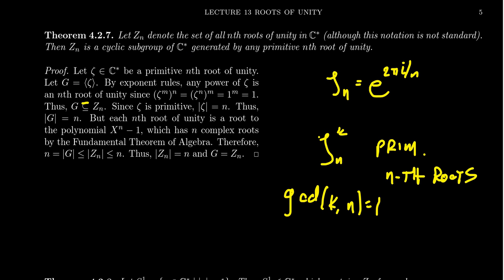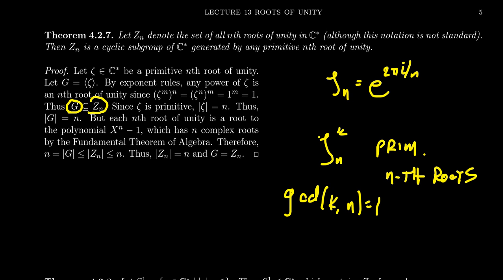Notice that in terms of order, zeta is an element of order n. You have to be careful with notation — are we talking about the modulus of the complex number, which would be one, or the order of the group element? Viewing zeta as a member of this group, it has finite order, and since it's a primitive nth root of unity, its order in the group is n. So the cyclic subgroup generated by zeta is a group of order n. Now we have a set of size n inside another set — if both sets have size n, containment forces equality.